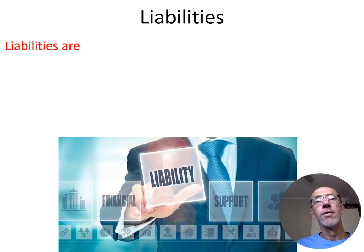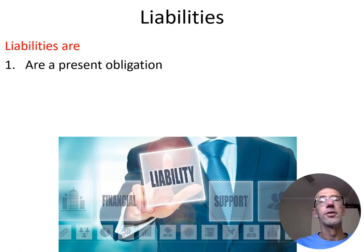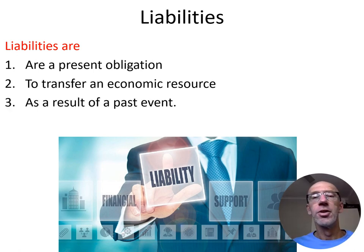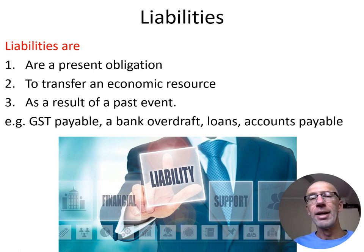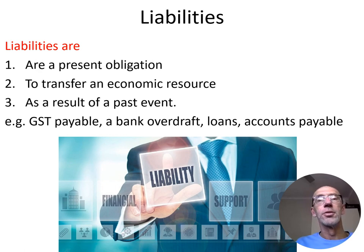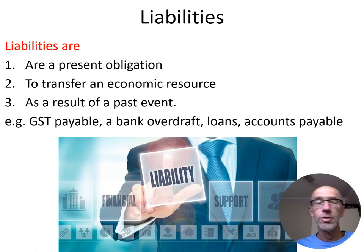For liabilities, we have three components on our checklist. First of all, there's a present obligation. Second, to transfer an economic resource — which will usually be cash — as a result of a past event, a past transaction. So if we look at accounts payable, there's a present obligation to transfer an economic resource, cash, to one of our suppliers as a result of a past transaction when we actually bought the supplies that we use to trade, if we are indeed a trading business.